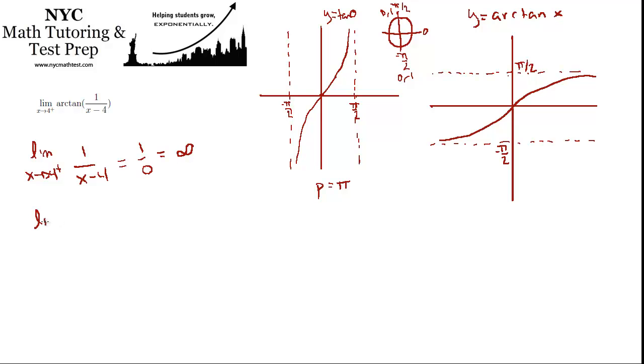So what's the arctangent of a very large number? We can almost rewrite this limit as, if you could kind of pretend infinity was a number for a minute, just when you see infinity, think large number. You could rewrite this limit as x approaches infinity of arctan x. You see how that's the same thing? That's like saying as 1 over x minus 4 becomes infinitely large, where does the arctan go?